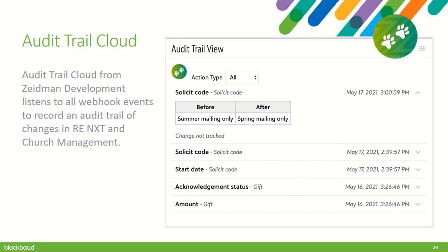The last webhook example is from Ziedman Development — this is the Audit Trail Cloud app. Audit Trail Cloud is the modern version of their Audit Trail plugin that makes use of every webhook available today. The app stores all changes within RANXT and creates an audit trail so you can look up any discrepancies and find when things were changed. This app will keep getting better as we release more webhook events, and if any of you are using webhooks, please give us feedback on the events you're interested in using.